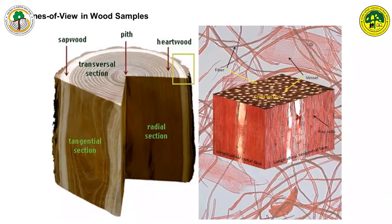In this picture, the three directions can be clearly seen. The center part is called the pith, and the transition directions — the reference point can be the ray cells, or it can also be the growth rings if visible. If you make a tangent to the growth rings, that plane is called tangential. If it is perpendicular to the growth rings, or parallel to the ray cells, that is called radial sections.